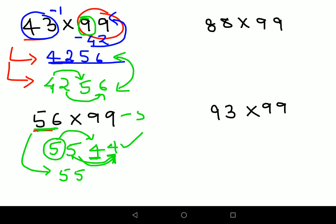Now over here we have 88, so again 88 minus 1 will get you 87. Now I need to add 1 to 8 to get a 9, and here I need to add 2 to 7 to get a 9. So my final answer is 8712.